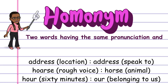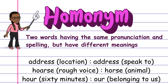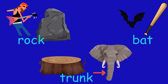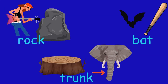A homonym refers to two words having the same pronunciation and spelling but different meanings. For example, "address" meaning a location, and "address" meaning to speak to someone. "Hoarse" meaning a rough voice, and "horse" meaning an animal. "Our" meaning belonging to us, and "hour" meaning 60 minutes.